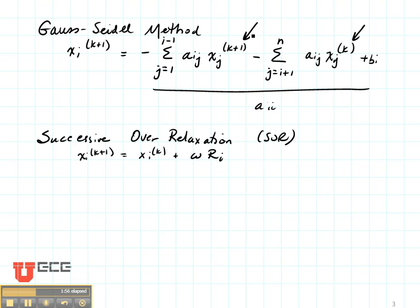Successive over relaxation is based on the Gauss-Seidel method, which is based on Jacobi's method, which is based on back substitution. This method moves toward relaxation or towards the solution of your problem faster. This is a relaxation method. You can see that we're trying to find our new values of X based on our old values of X and something called the residual.